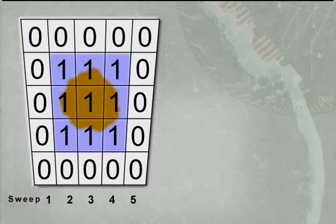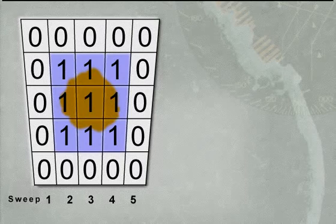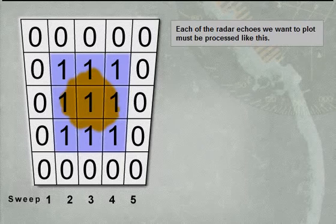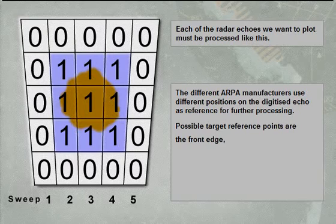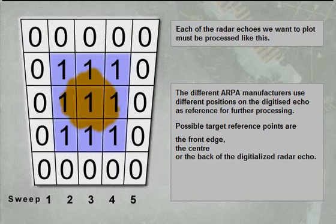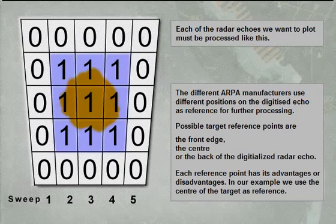A good ARPA is capable of acquiring all echoes which can be seen by the human eye. The tracking gate may look like this: tracking gate cells marked with zero are signals of amplitude below a specified threshold; received radar signals above must be processed. The different ARPA manufacturers use different positioning references — the front edge or the back edge. Each reference point has its advantages and disadvantages. In our example, we use the centre of the target as the reference.